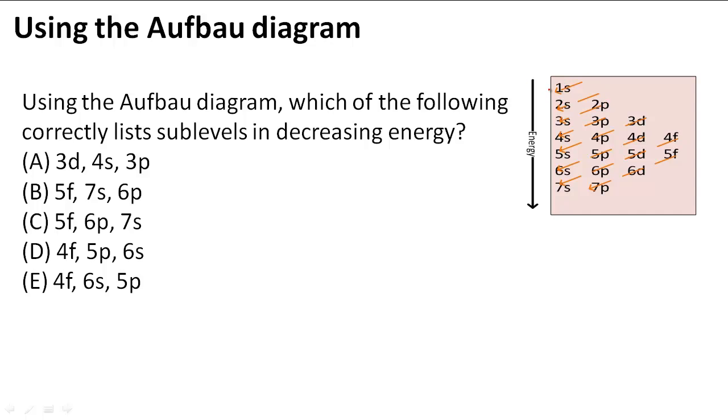So what we can see is first 1s, then 2s, then 2p, then 3s. Notice that this arrow is pointing 2p, then 3s, then 3p, then 4s, and so on and so forth.